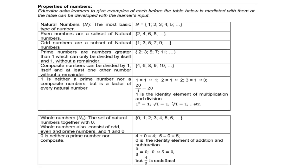Properties of numbers. If you are an educator, you must ask your learners to give examples of each before the table below is mediated with them, or the table can be developed with the learner's input. For instance, ask learners what are natural numbers. We use capital N, and these are the most basic type of numbers: 1, 2, 3, 4, 5 to infinity. You must ask yourself which numbers are missing here.